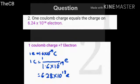How many electrons equal one Coulomb? One electron equals 1.6 into 10 to the power minus 19 Coulomb. Therefore, 1 Coulomb equals 1 divided by 1.6 into 10 to the power minus 19 electrons, which equals 6.28 into 10 to the power 18 electrons.